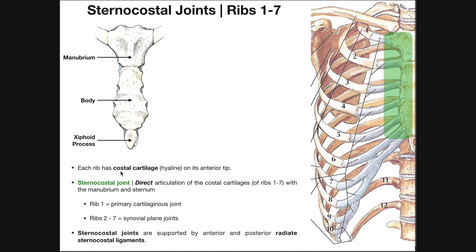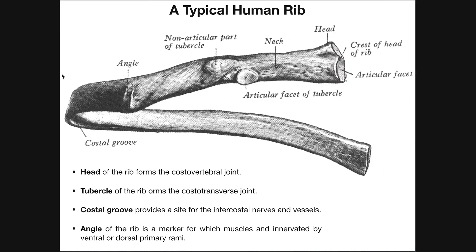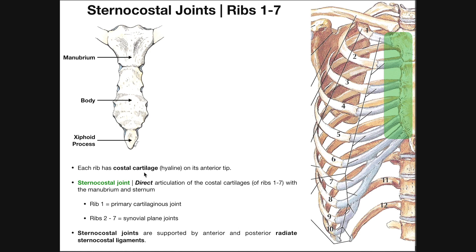Each rib has costal cartilage — that's hyaline cartilage — on its anterior tip. The anterior part of the rib is here, and the region with the head and tubercle is where the rib articulates with the vertebra posteriorly. All 12 pairs of ribs have hyaline cartilage on the anterior tip, and that hyaline cartilage is the costal cartilage.